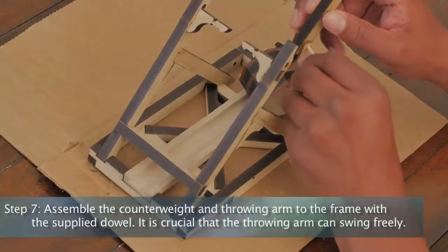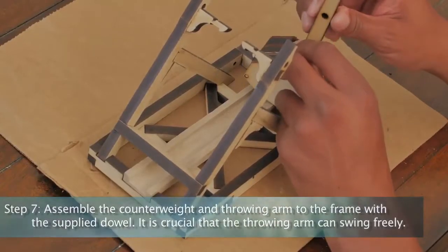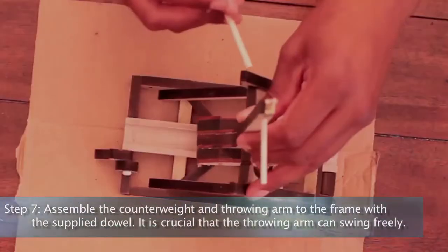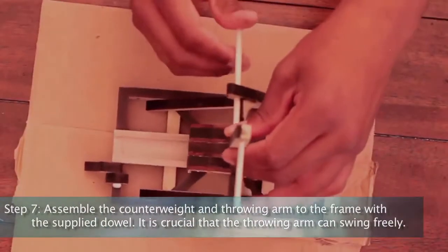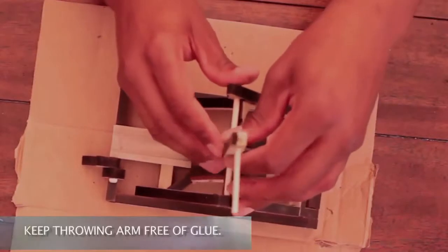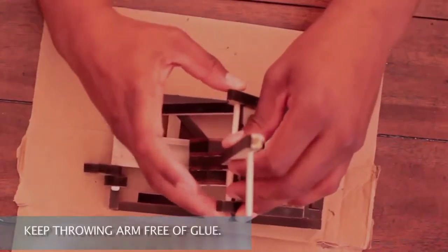Step 7: Assemble the counterweight and throwing arm to the frame with the supplied dowel. It is crucial that the throwing arm can swing freely. Keep throwing arm free of glue.